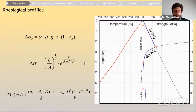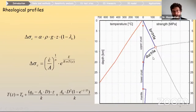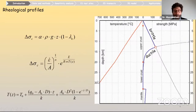Brittle and ductile deformation are respectively represented by frictional sliding — shown by the equation at the top — and by the power-law creep for ductile deformation — the middle equation. Also shown at the bottom is the equation for the geothermal gradient calculation, which enters directly the exponential term of the power-law creep. It is very important to determine the geothermal gradient appropriately to obtain a reliable rheological profile.